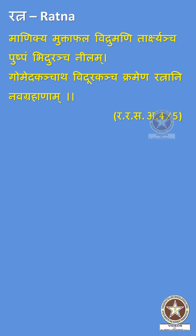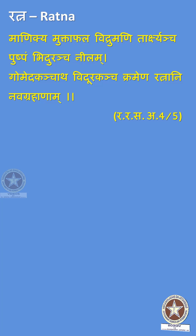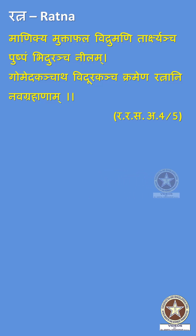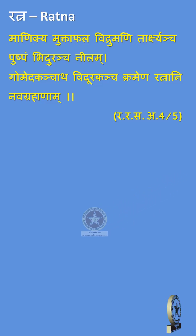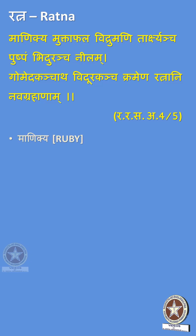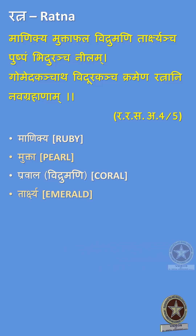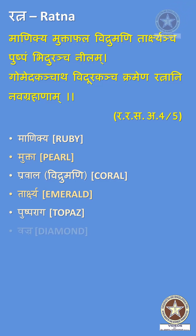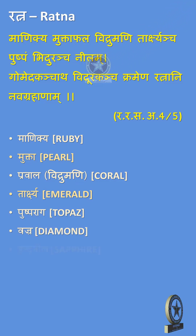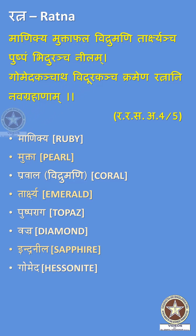The next category of drugs are Ratnas. Reference: Rasaratna Samuchaya Chapter 4 Shloka 5. There are 9 Ratnas explained: Manikya (Ruby), Mukta (Pearl), Pravala (Coral), Takshya (Emerald), Pushparaga (Topaz), Vidura or Vajra (Diamond), Neela or Indra Neela (Blue Sapphire), Gomedha (Hessonite), and Vidurya (Cat's Eye).